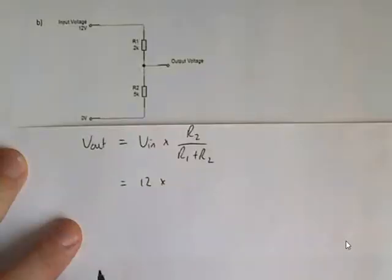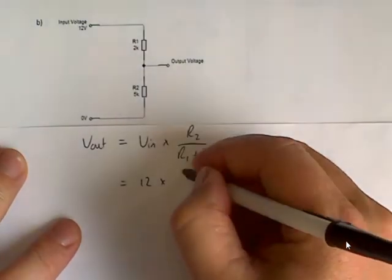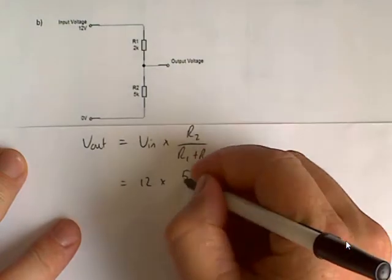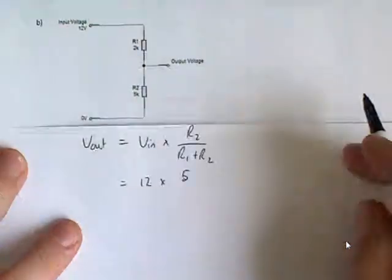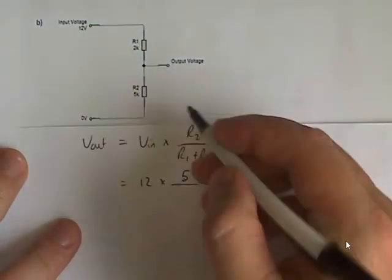we have 12 volts, R2 is 5K, I'm just going to work in K here, because everything is in K ohms, I can cancel, over 5 plus 2,